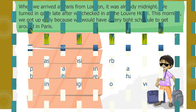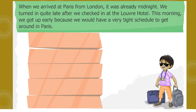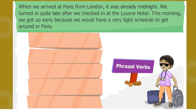When we arrived at Paris from London, it was already midnight. We turned in quite late after we checked in at the Louvre Hotel. This morning we got up early because we'd have a very tight schedule to get around in Paris. In the paragraph there are four verbs followed by prepositions. These verbs are known as phrasal verbs.